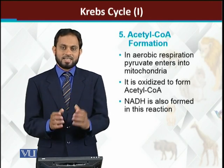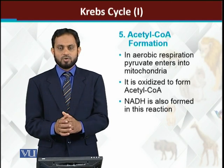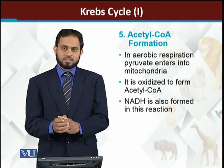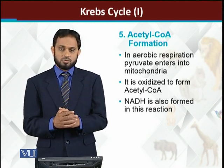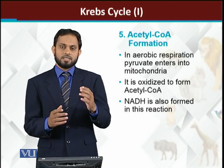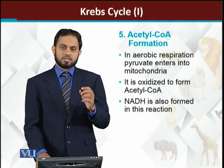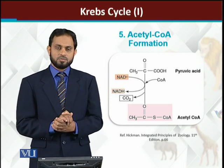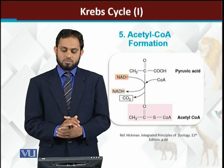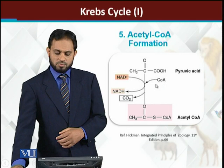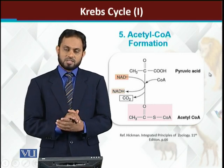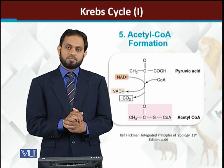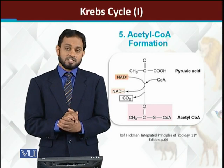When pyruvate enters the mitochondria, it does not directly participate in the Krebs cycle. First, there is a decarboxylation and reduction step in which pyruvate is converted into acetyl-coenzyme A. During this step, one molecule of CO₂ and one molecule of NADH are also produced. This is the step where pyruvate is converted to acetyl-coenzyme A — the carboxylic group is released as CO₂ and 1 NADH is synthesized.